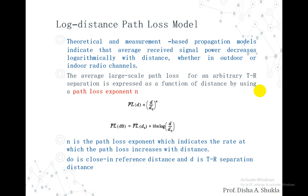So the average large scale path loss of an arbitrary transmitter-receiver separation is expressed by a function of distance using a path loss exponent n. The equation describes the path loss based on the distance and it varies as (d/d0) raised to n. As PL calculated in dB, we get PL(d0) plus 10n·log(d/d0). Here n is the path loss exponent which indicates the rate at which the path loss increases with the distance.